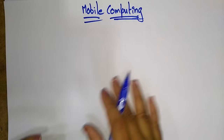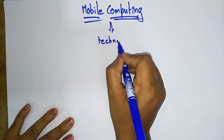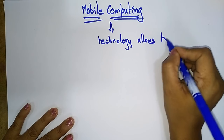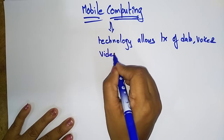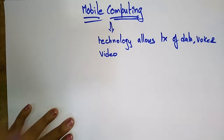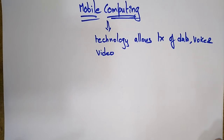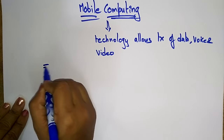So now let's see what is Mobile Computing. First, we call it a technology. It is a technology that allows transmission of data, voice, and video via a computer or any other wireless-enabled device, without having to be connected to a fixed physical link. There is no need for a fixed physical link in mobile computing.